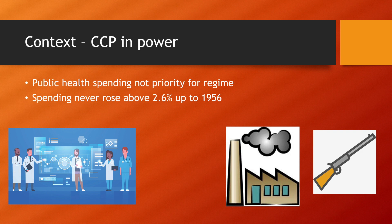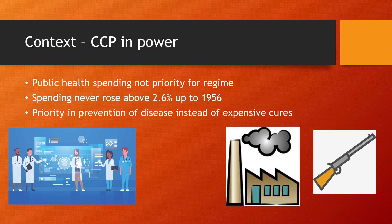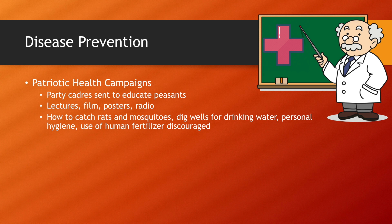So, instead of spending heavily in health care and investing in research to improve the quality of health care, the regime focused on disease prevention. They used campaigns called the Patriotic Health Campaigns, where they sent party members to educate the peasants in the countryside, teaching them about personal hygiene and how to catch pests that would spread disease.